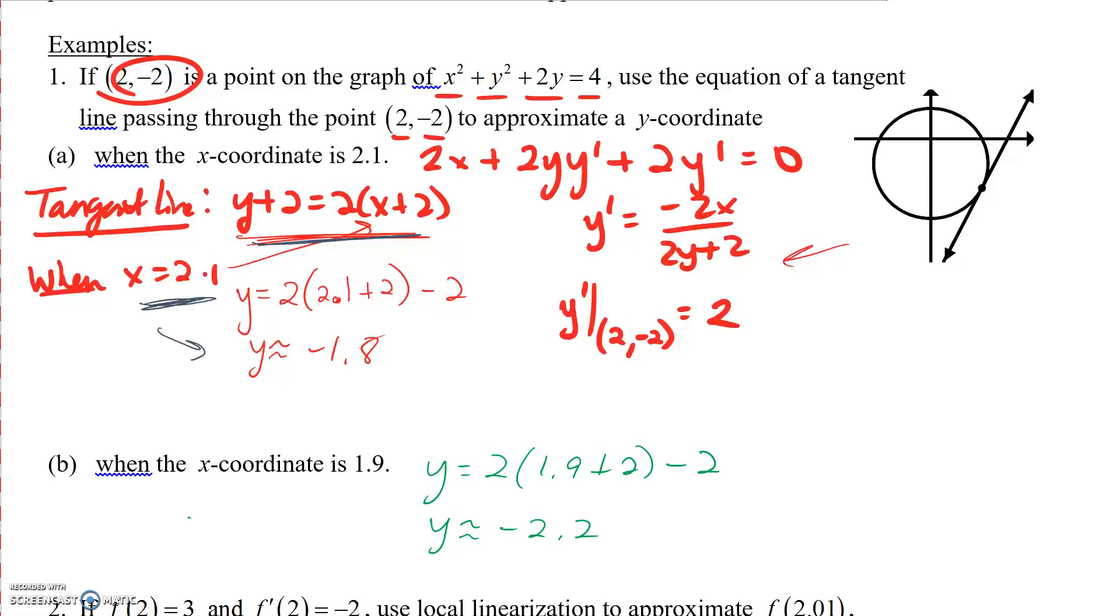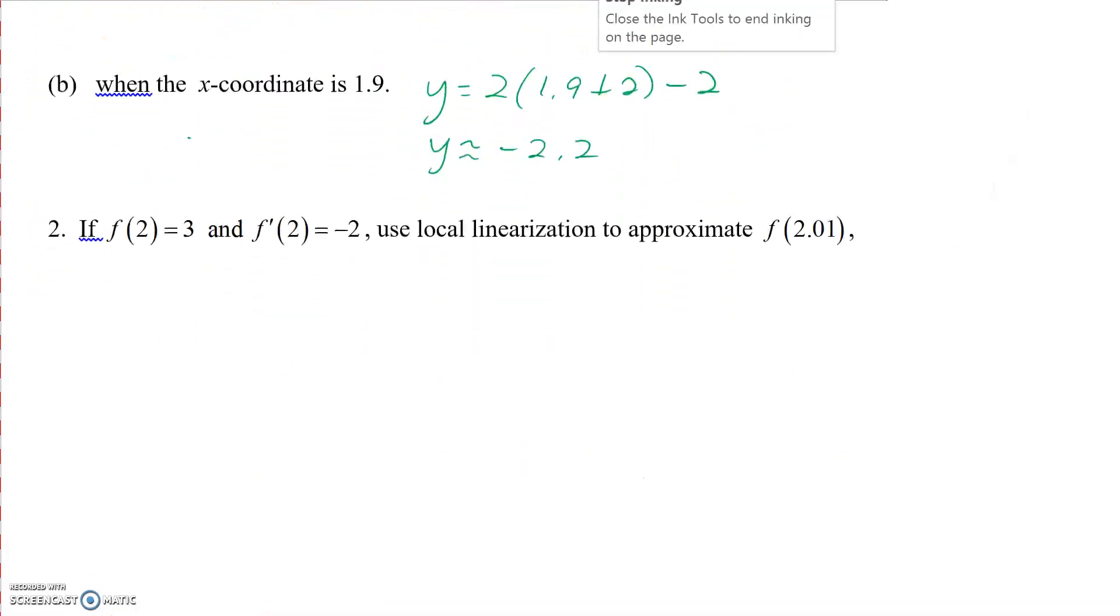Let's take a look at the last one. If f(2) = 3 and f'(2) = -2, what is the local linear approximation to approximate f(2.01)? Now we don't have the derivative or an actual function.